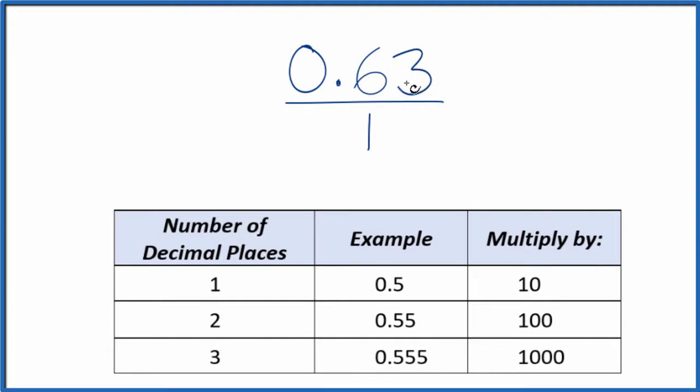What we need to do is get this 0.63 to be a whole number. And I see we have two decimal places here. Two decimal places, let's multiply that by 100. So 100 times 0.63, that ends up giving us 63. And that's a whole number.